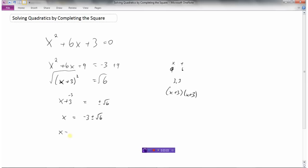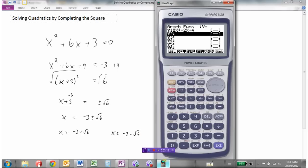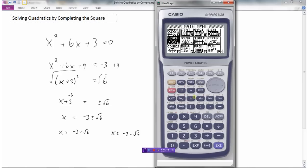So our two solutions would be x equals negative 3 plus or minus root 6. So technically one is negative 3 plus the square root of 6, and the other one is negative 3 minus the square root of 6. And those would be our exact values. If we wanted to get a decimal approximation, we could do that. We just have to use a calculator.